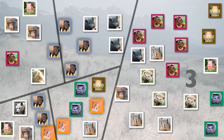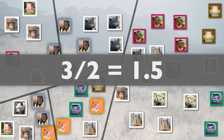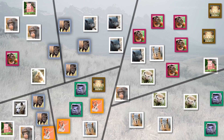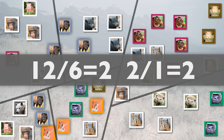Now to divide up the group on the right, we do the same thing we did with the number 7. Take 3, divide it by 2, you get 1.5. Round 1.5 up, you get 2; round 1.5 down, you get 1. So we want to divide that group into a 2-to-1 ratio. The shortest line that will do that gives us 12 voters on the top and 6 voters on the bottom. 12 divided by 6 gives us 2, and 2 divided by 1 gives us 2 — so we know we've drawn that line in the correct spot.